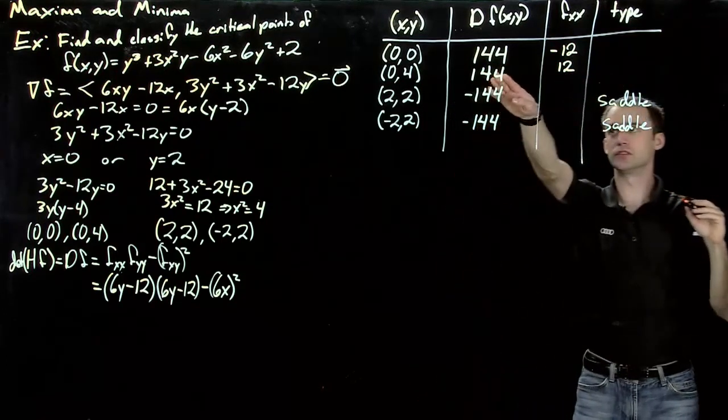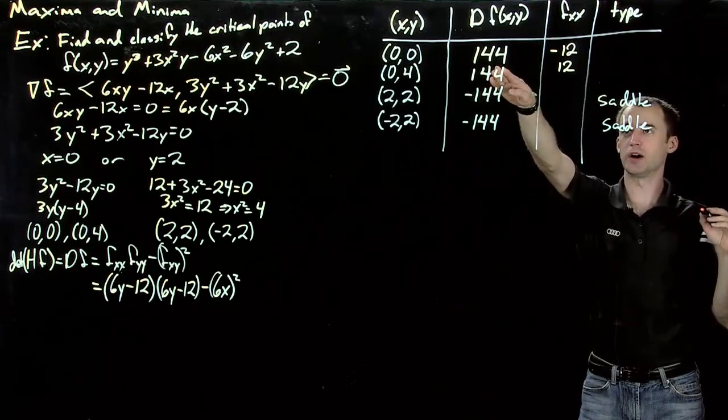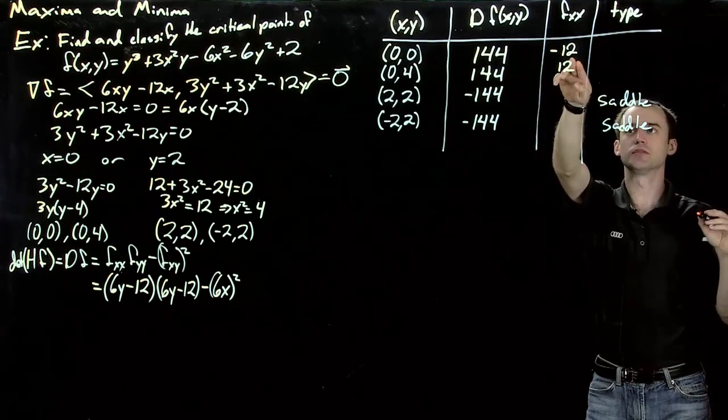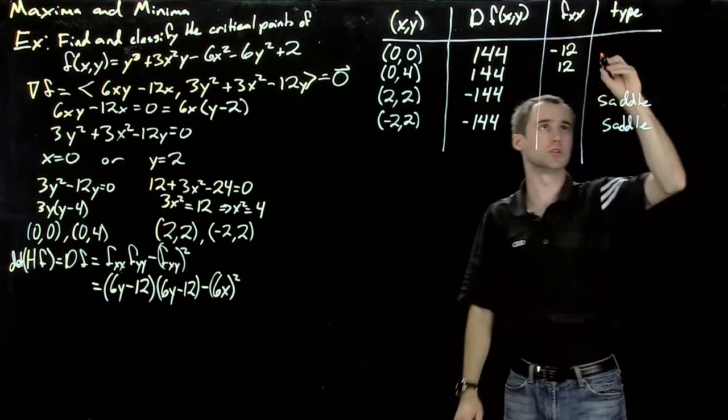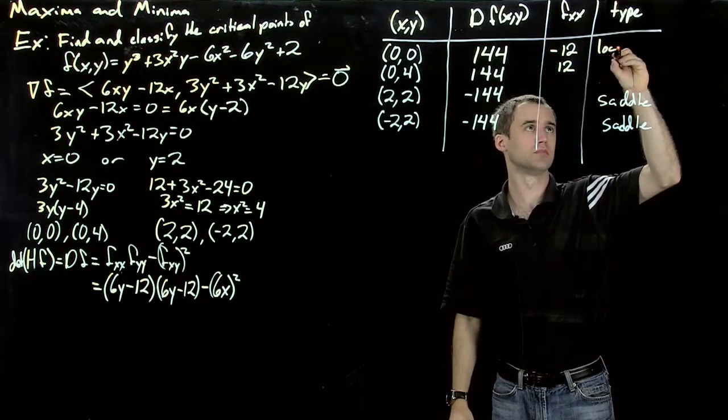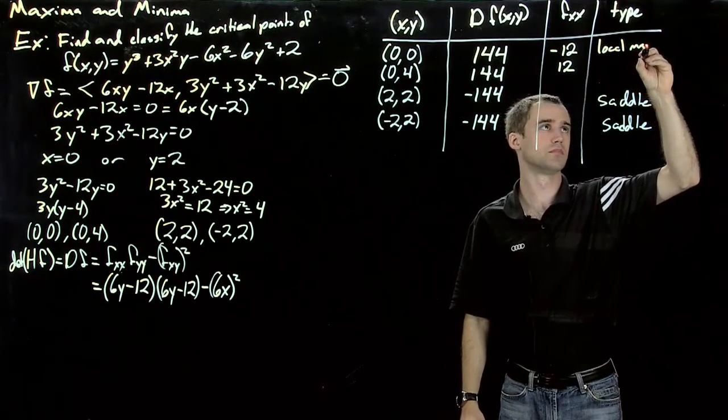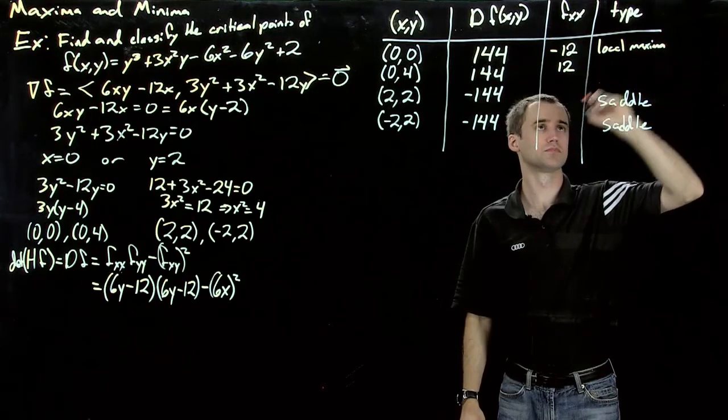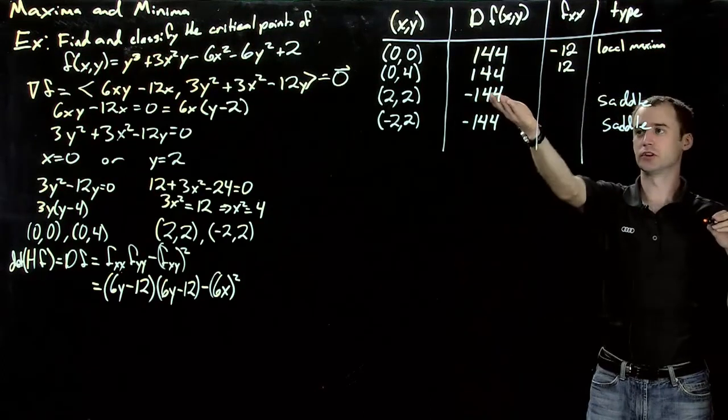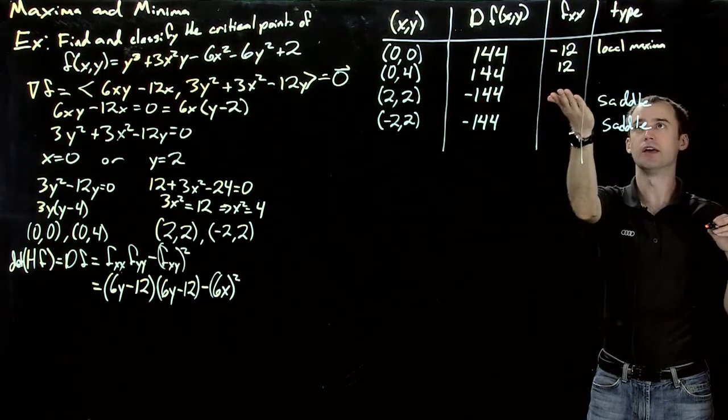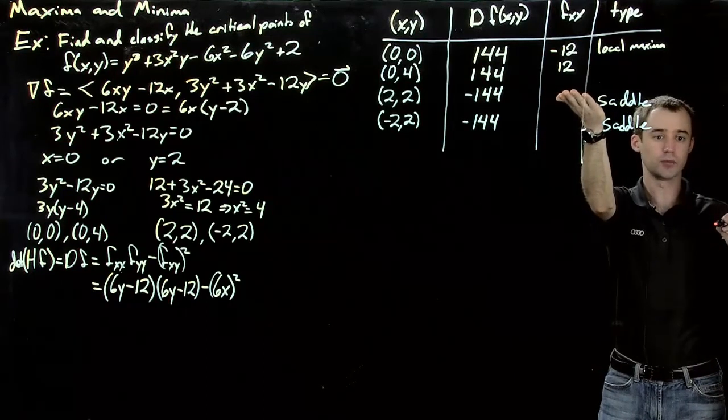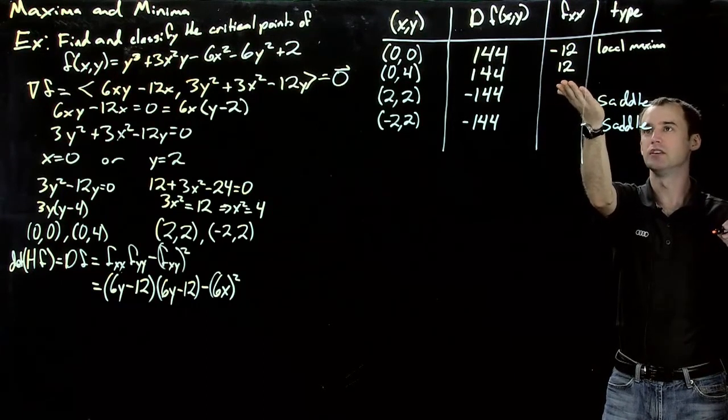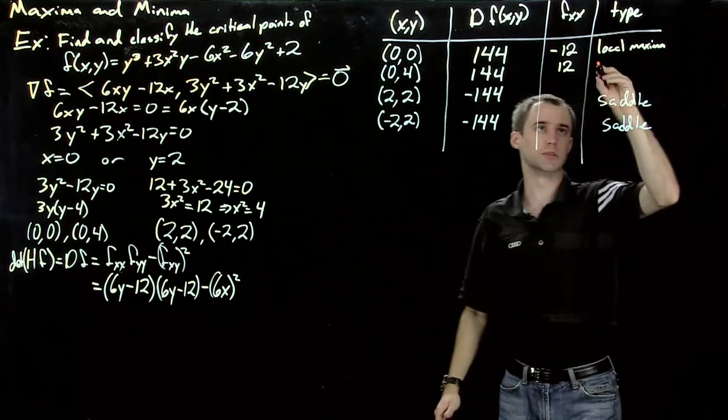So if we have a case where the determinant of the Hessian is positive, and the second derivative is negative, then this is a local maxima. If the determinant of the Hessian is positive, and the second derivative with respect to x is positive, then it's a local minima.